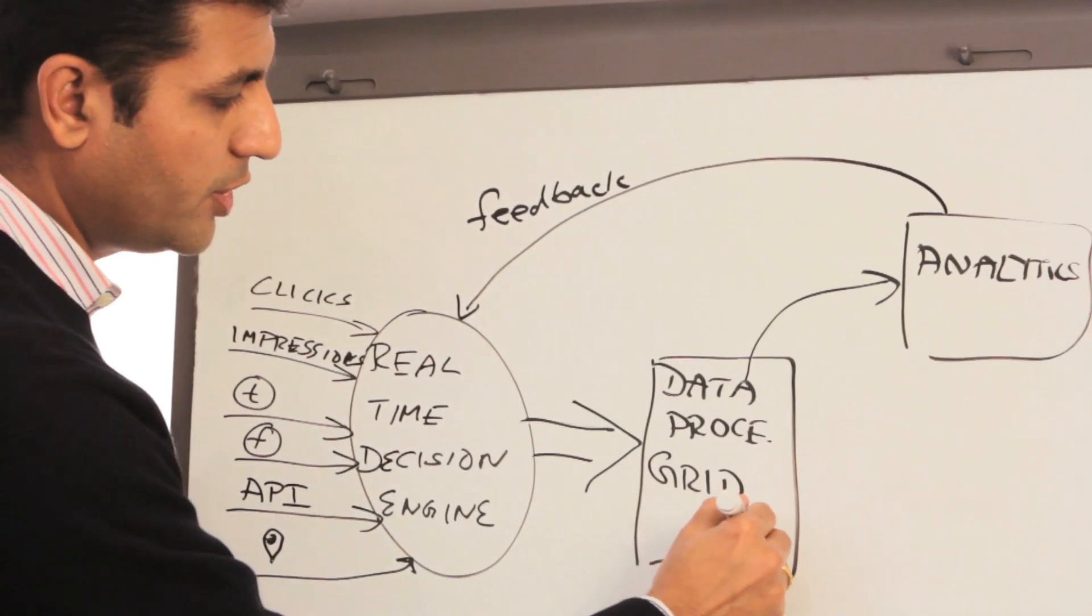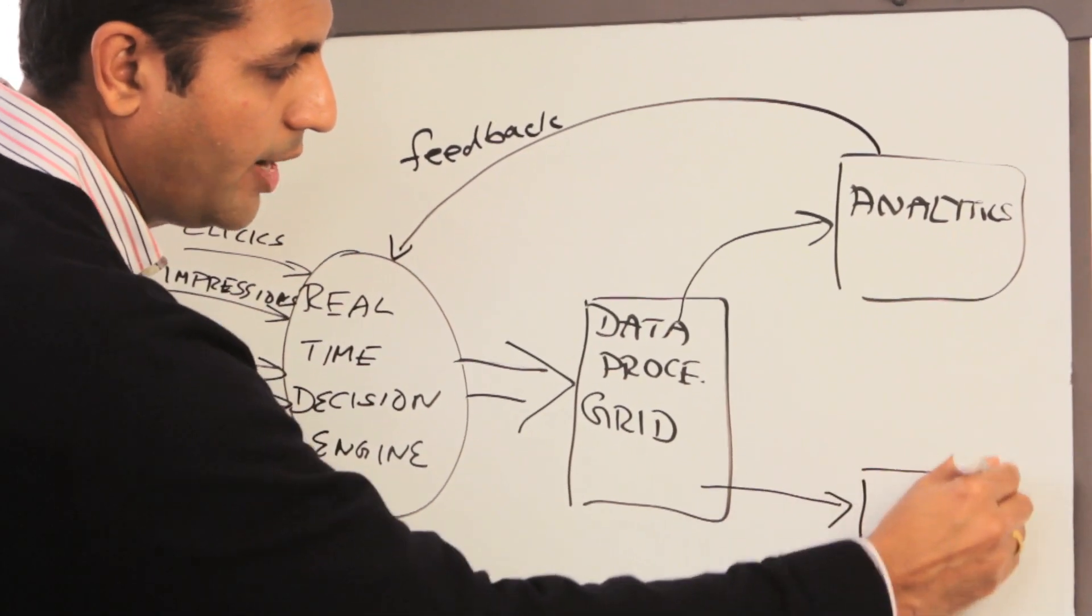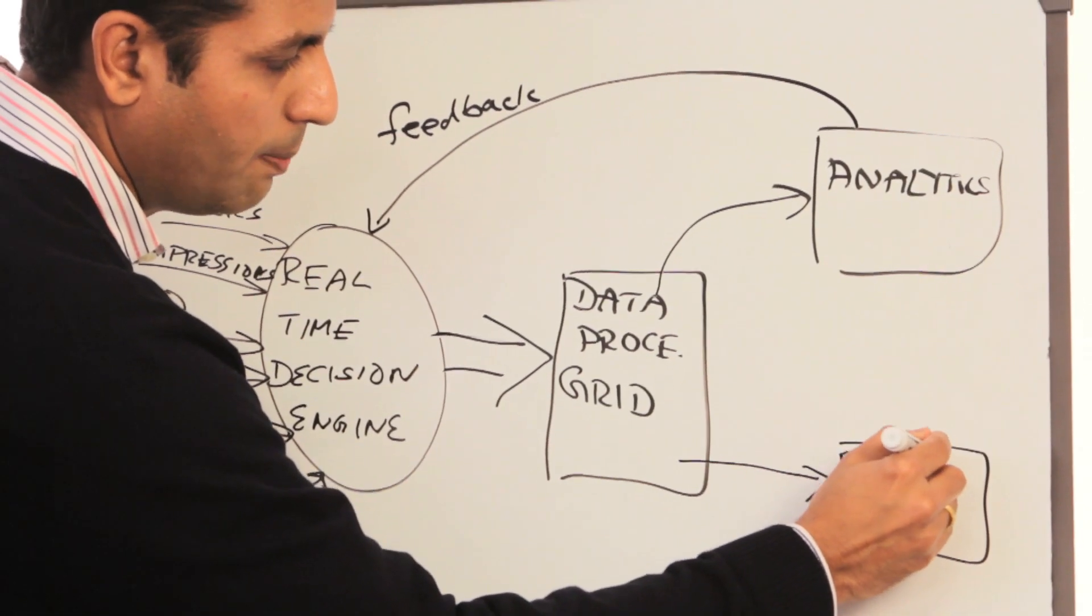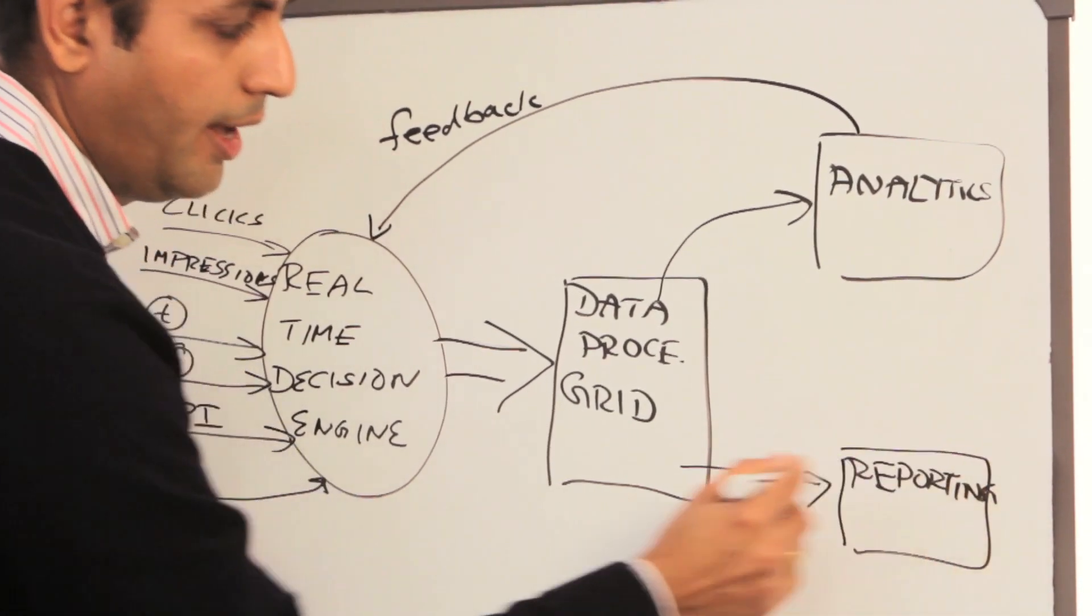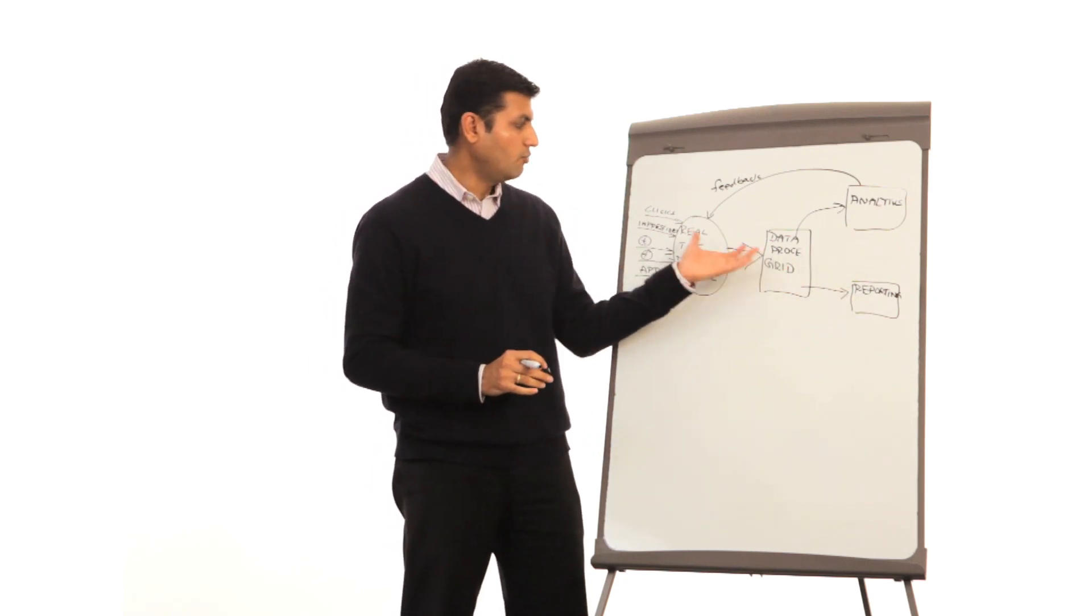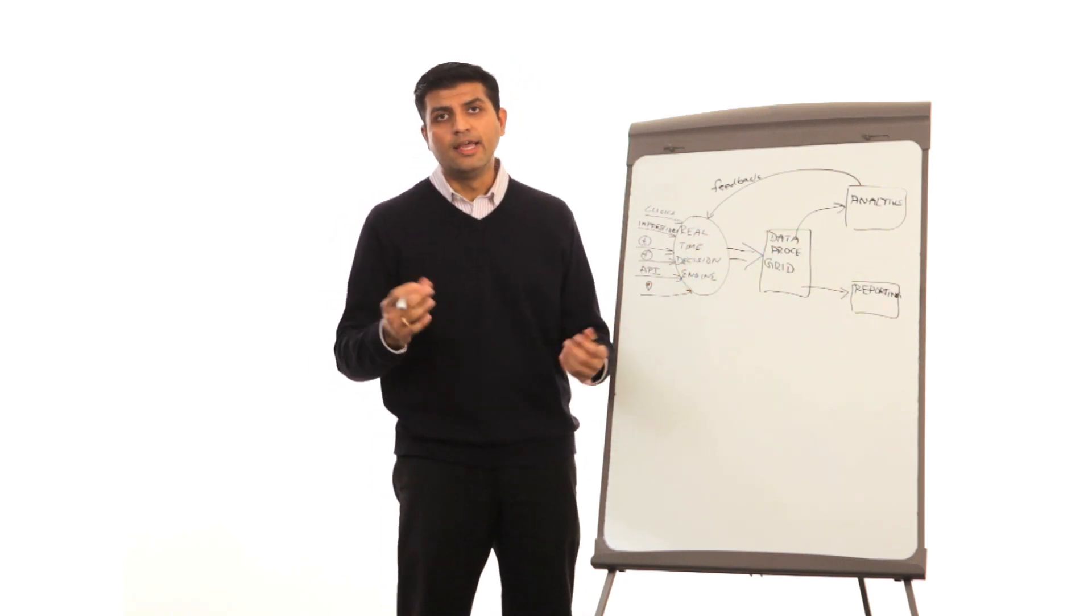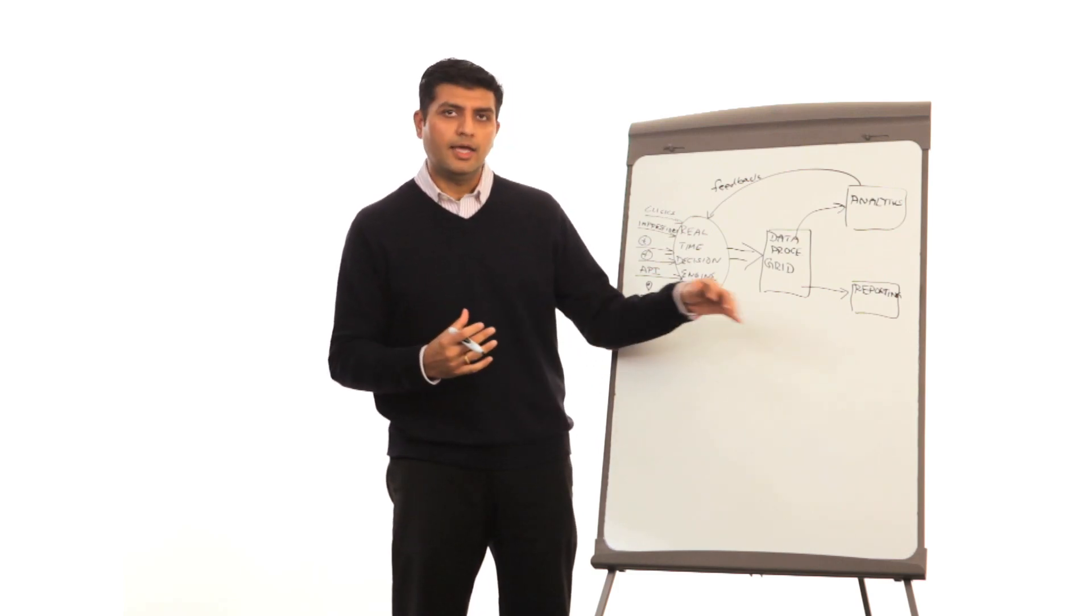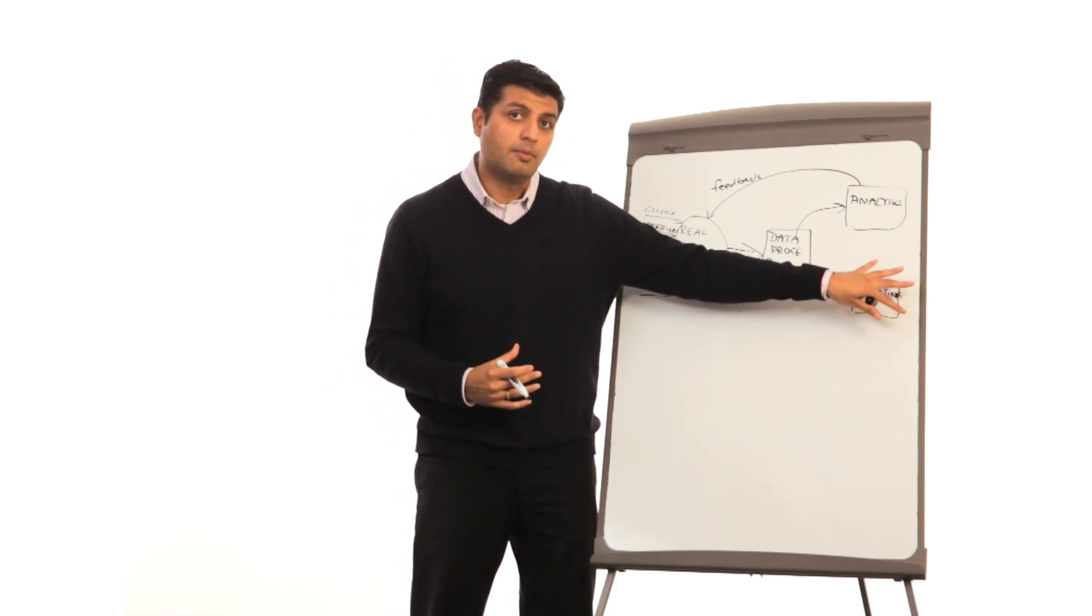Another target point for the data grid is a reporting environment of some sort. From the reporting environment, you are powering your BI, you're powering your exec dashboards and those type of things. Typically in this digital media example, you may want to look at campaign performance, you may want to look at unique visitors on a site and those types of things. Those are all activities powered by the reporting.